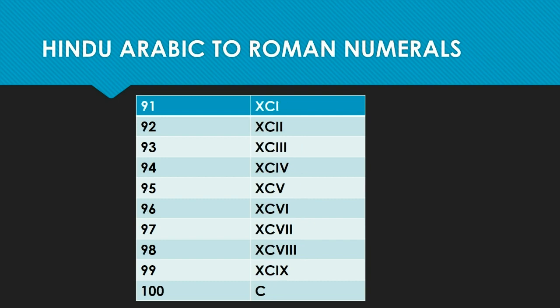Ninety is XC. Here you can see 91 to 100. Ninety-one will be XC plus 1, giving us XCI. And 100 — as we saw on the first page with the special numbers — one hundred is represented as C.